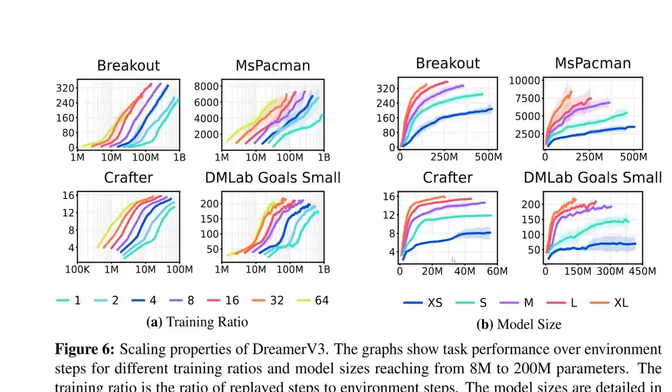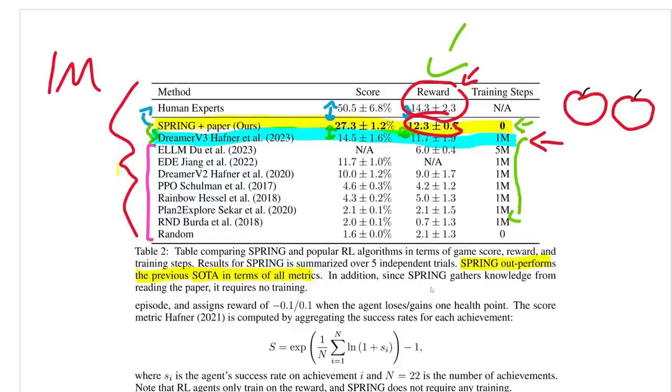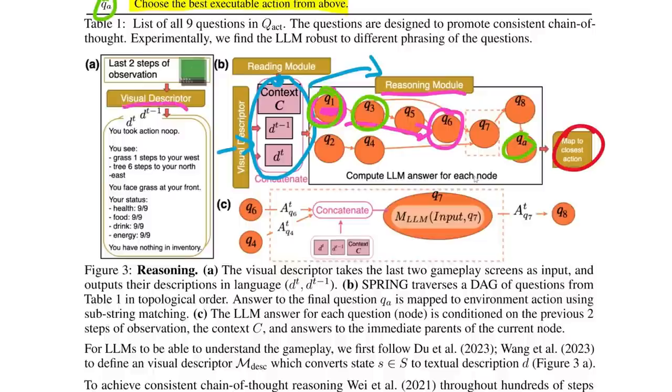After all, if you're going to do a benchmark to say that your method works better than any other methods, it needs to be on the same playing field working with the same amount of resources. And I think the claim that spring uses zero steps of training data, therefore it should be compared with RL methods that use small amounts of data is a dubious one. I think what the claim really should have been here from the authors is that spring with GPT-4 can outperform the best RL methods that are trained with only 1 million steps of data.